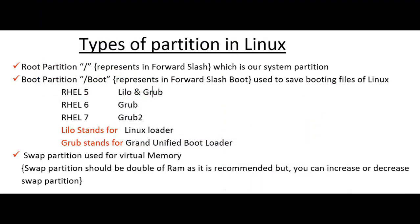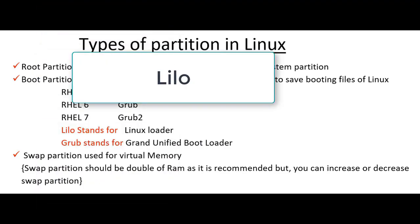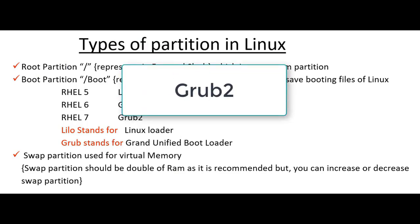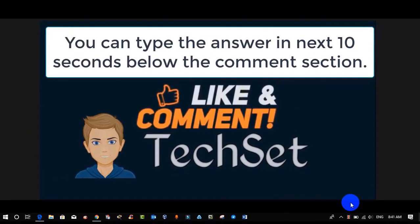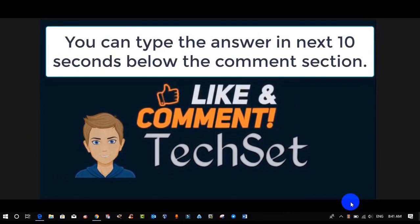Now, question time. What is the booting file of Red Hat 7? Your options are: Option A — Grub, Option B — Lilo, Option C — Grub 2. You can type your answers in the next 10 seconds in the comment section below.